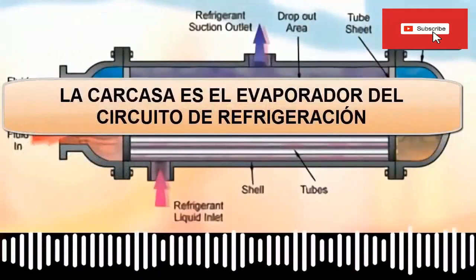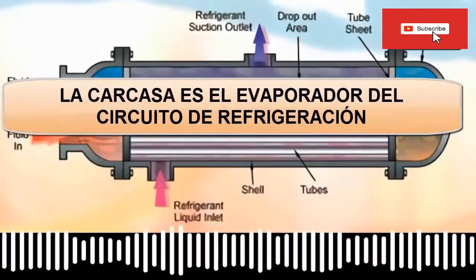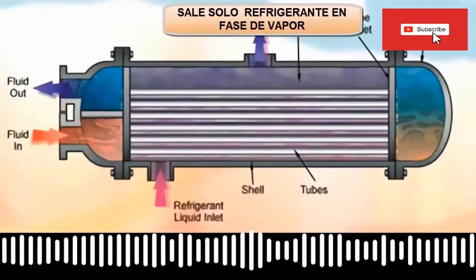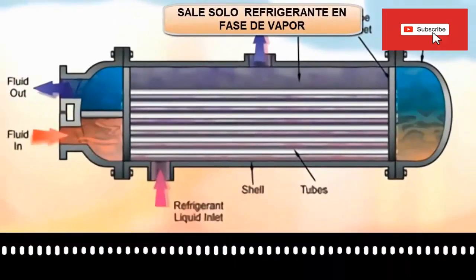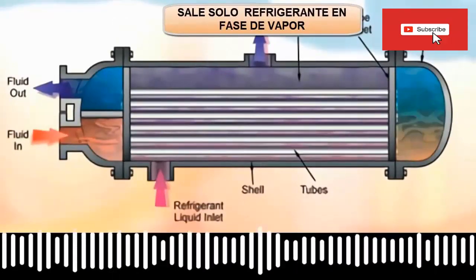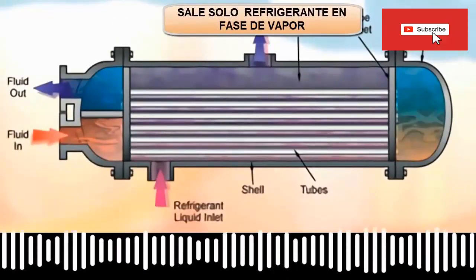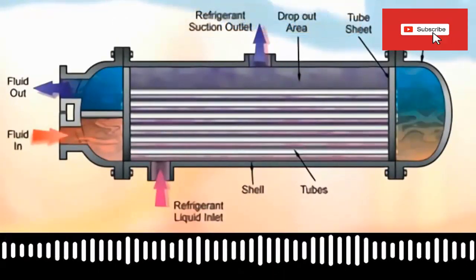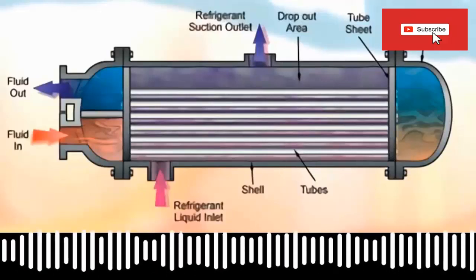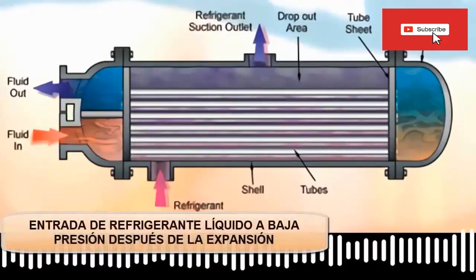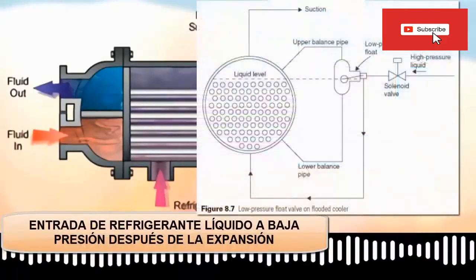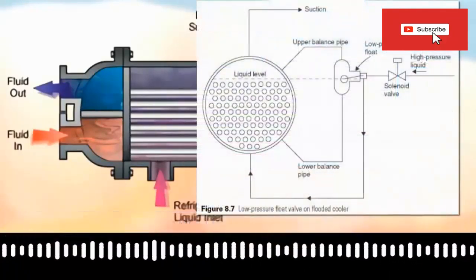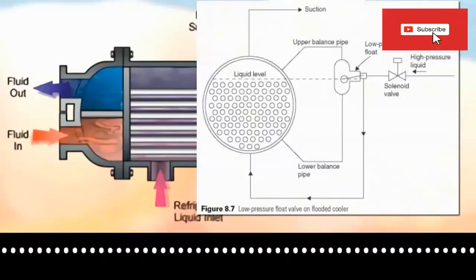4. The casing will be the evaporator of the refrigeration circuit. 5. The exit of the refrigerant from the evaporator or casing is located at the top and is always above the level; therefore, to exit, the refrigerant must be in a vapor state in order to rise and reach the exit point. 6. The expansion valve is in charge of lowering the pressure of the refrigerant that enters the evaporator, but the amount of refrigerant that the evaporator handles is regulated by the float at the entrance and by the weight of refrigerant that evaporates.